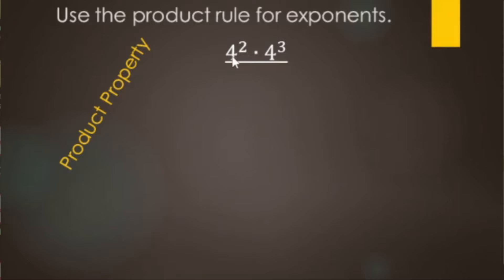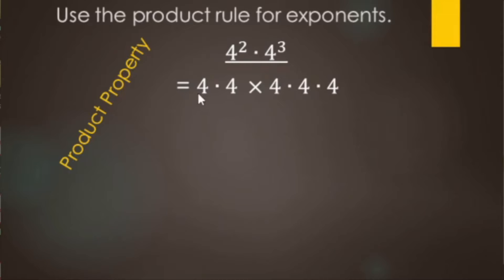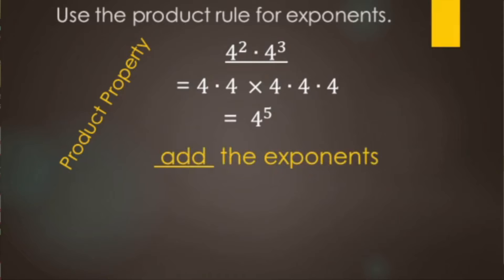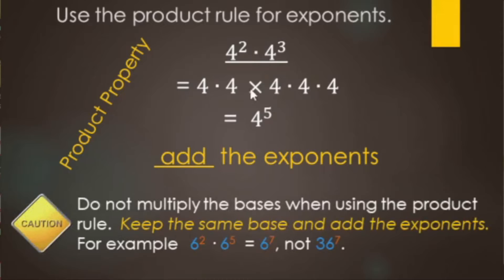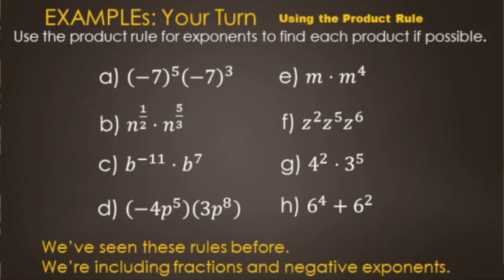Let's look at where the product property comes from. We have two fours being multiplied, times an additional three fours being multiplied. So two fours looks like that, times another three fours — giving us a total of five fours being multiplied. This pattern holds for all same-base multiplication: just add the exponents. A common misconception is also multiplying the bases, but it's not 16 to the fifth — it's still four to the fifth, because the multiplication is already included in the exponents.